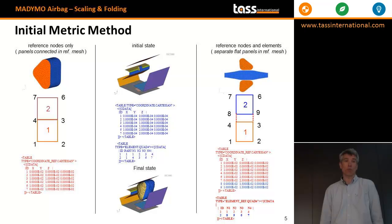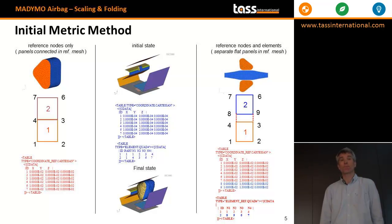Going to the left column, that's the situation where you don't have flat panels — the elements are connected to each other in the reference state already. In the right picture, you see an example with elements underscore ref, where you have three separate panels that are all flat. This introduces extra nodes — in this case nodes 8 and 9. Manimo can handle this pretty well. The way it works is by the sequence of nodes in the element, so in the initial state it knows that nodes 8 and 9 have to be substituted for nodes 4 and 3.